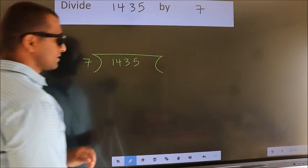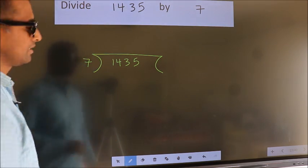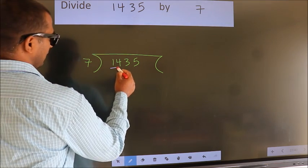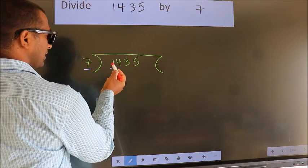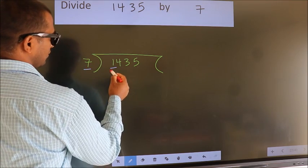This is your step 1. Next, here we have 1, here 7. 1 smaller than 7. So, we should take 2 numbers, 14.